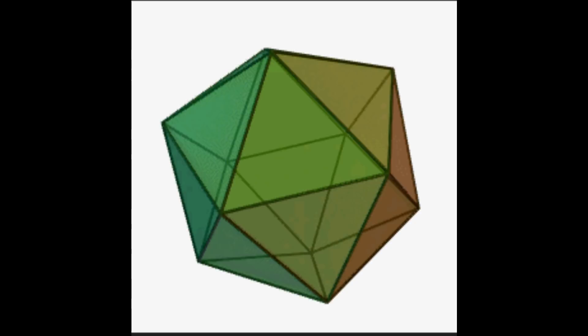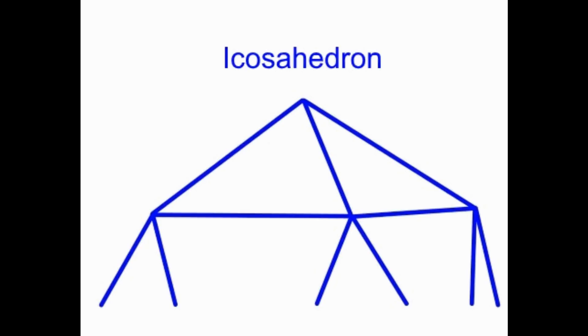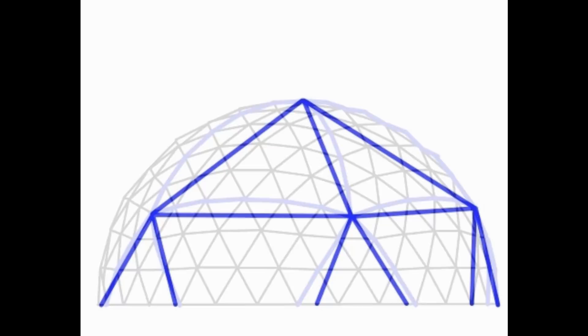A geodesic dome is derived from the icosahedron, a spherical polyhedron with 20 sides, or faces, made from equilateral triangles. To make a dome, the spherical icosahedron is divided in half, and each face is subdivided into smaller triangles in a way that produces a more spherical shape.